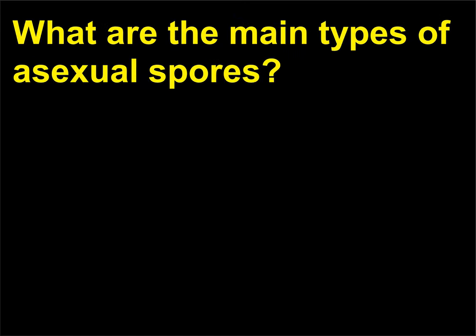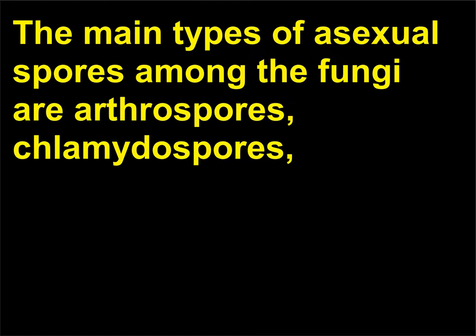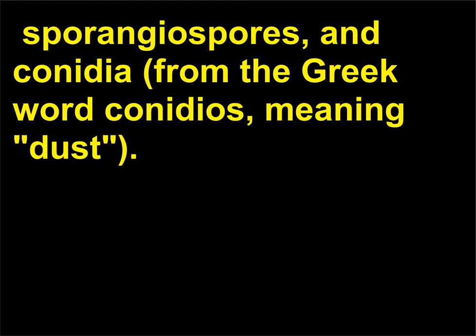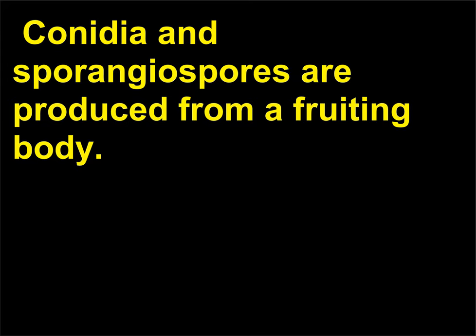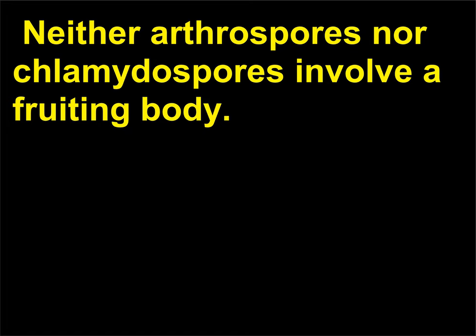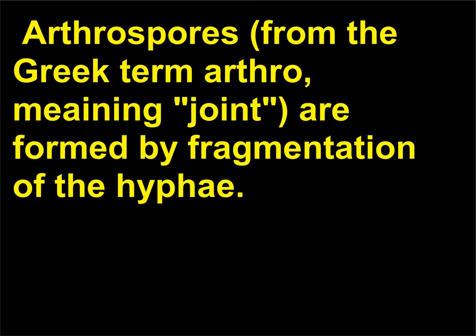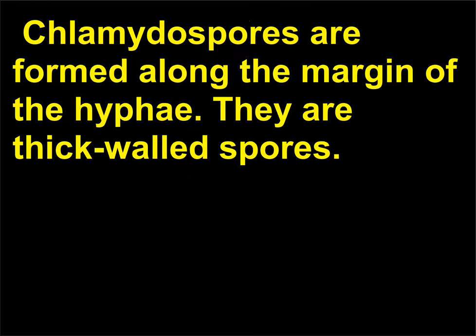What are the main types of asexual spores? The main types of asexual spores among the fungi are arthrospores, chlamydospores, sporangiospores, and conidia (from the Greek word konidios, meaning dust). Conidia and sporangiospores are produced from a fruiting body, while neither arthrospores nor chlamydospores involve a fruiting body. Arthrospores (from the Greek arthro, meaning joint) are formed by fragmentation of the hyphae. Chlamydospores are formed along the margin of the hyphae and are thick-walled spores.